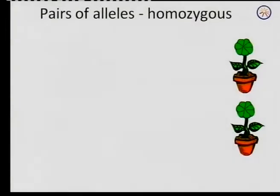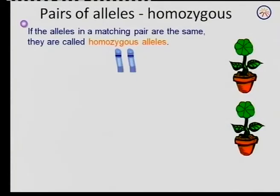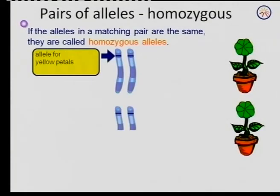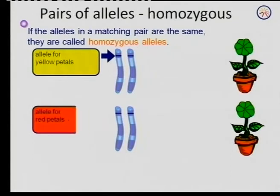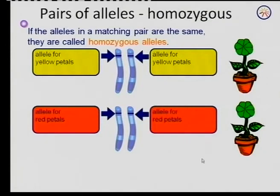We can now look at the next term: homozygous alleles. If you look at that, you will find that both alleles code for exactly the same characteristic — in this instance, the same color.